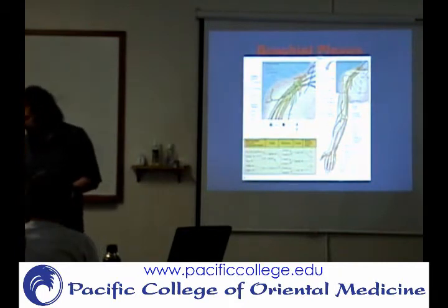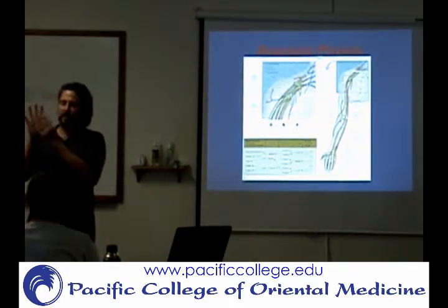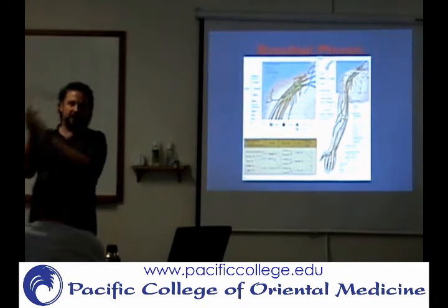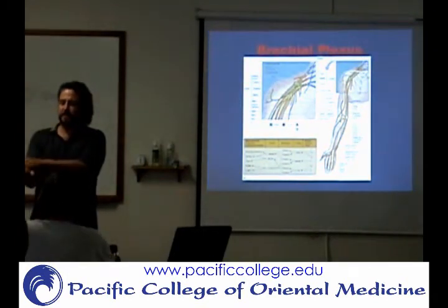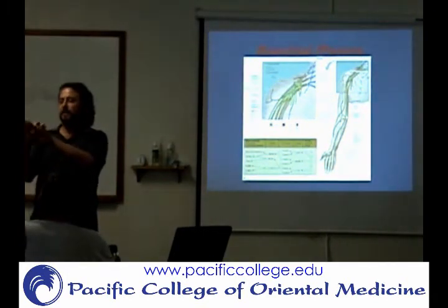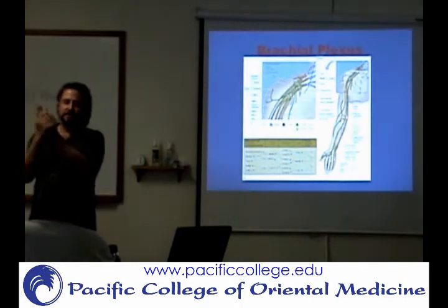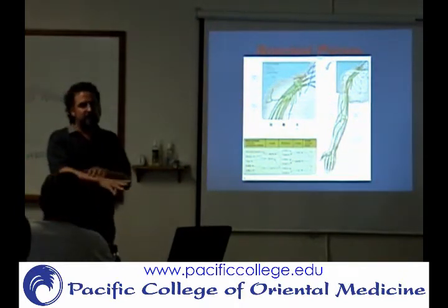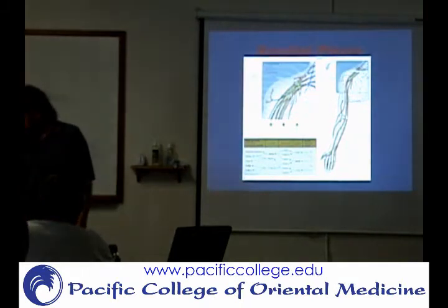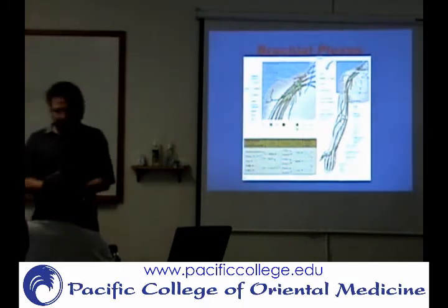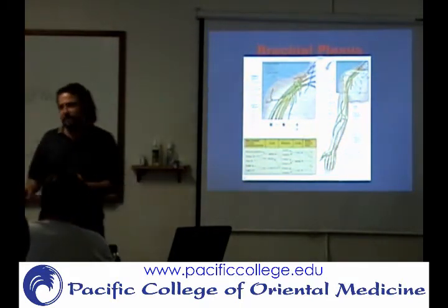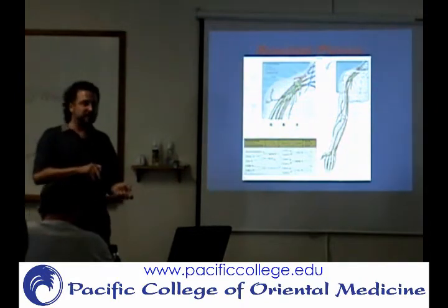On the hand, the median nerve covers the anterior surface of the first three fingers and around the back a little bit. Then you're going to have the ulnar nerve here, and then you're going to have the radial nerve back here. Just understand the difference between nerve root distribution and peripheral nerves.